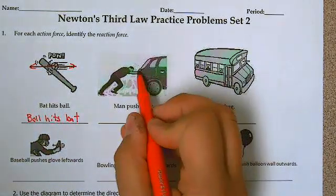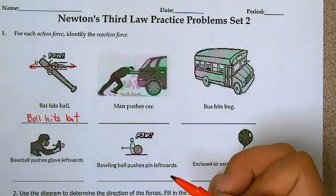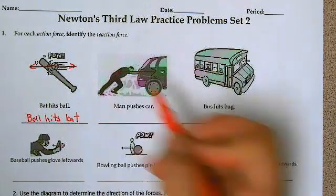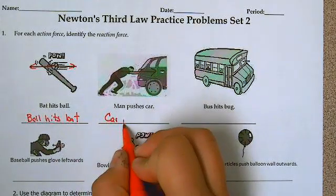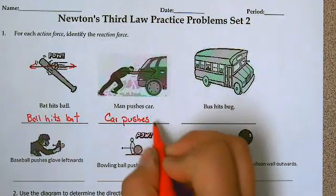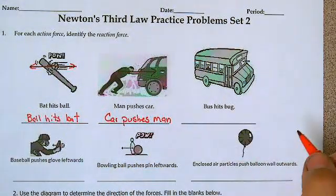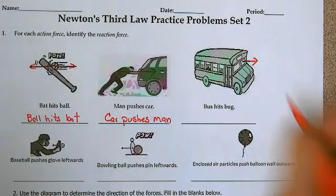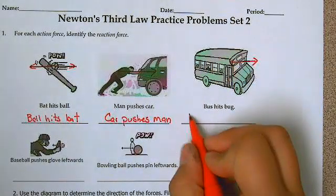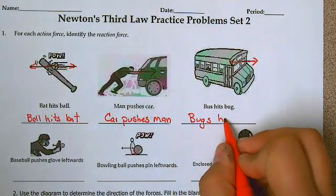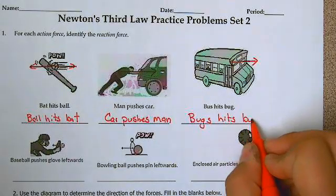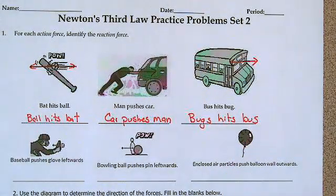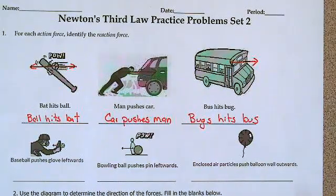Here we have the man pushing the car, so the arrow would go this way. The reaction force would be coming back the other way — that would be the opposite — so the car pushes the man. This one says the bus hits the bug. There's the little tiny bug, and the opposite is the bug hits the bus. Now you're starting to see how this works — they're opposites from each other. Pause the video, try the next three, and then unpause it to see if you got them correct.